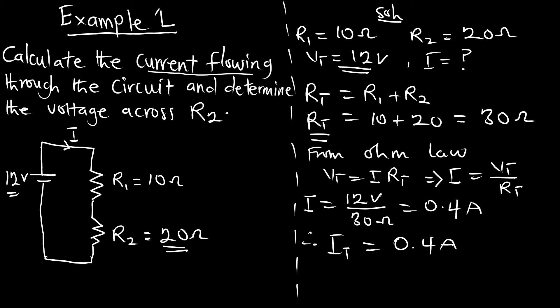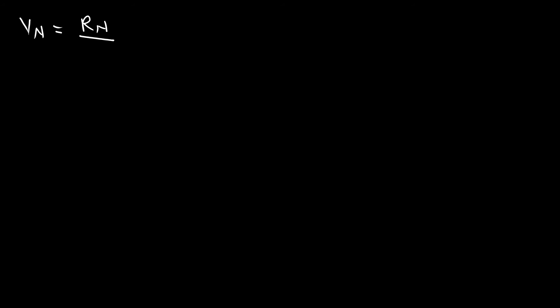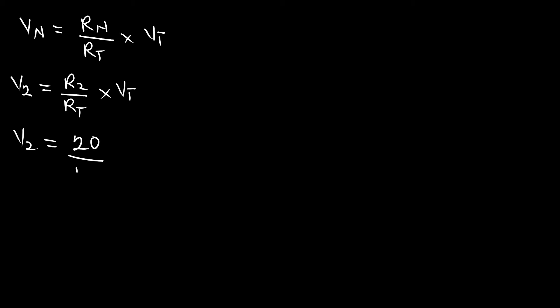Now we are done with the current. Let's find the voltage across resistor 2 using the voltage divider approach. VN equals RN over RT times VT, so V2 equals R2 over RT multiplied by VT. R2 is 20 ohms, total resistance is 30, and total voltage is 12 volts. With this, V2 is 8 volts. Therefore, the voltage across resistor 2 is 8 volts.